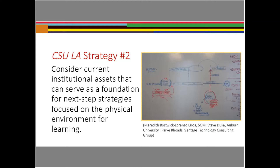Strategy number two: the first strategy was bringing the right people to the table — a truly wonderful, diverse group of people who were willing to speak their minds and be open. One of the rubrics of good planning is that you can share and not disagree. Now we're going to talk about institutional assets. I've asked Pam to continue the conversation about who your students are and where they come from.